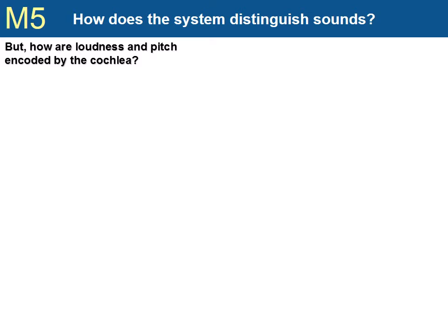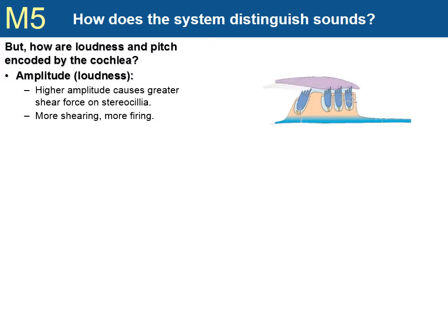But that still doesn't explain how the qualities of sound are encoded. How is amplitude turned into loudness, and how is frequency turned into pitch? Let's start with amplitude. Higher amplitudes cause the tectorial membrane to move farther back and forth across the stereocilia. The more the stereocilia are moved, the more the hair cells fire. More firing is perceived as a louder sound.